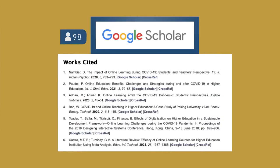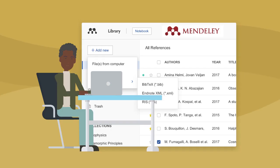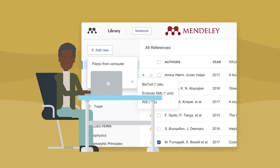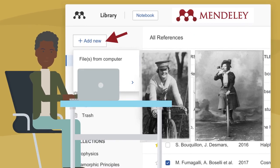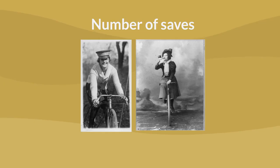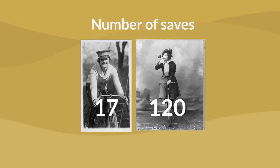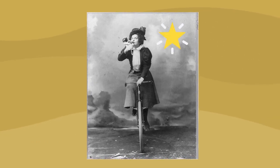Tools like Google Scholar use the Works Cited or Reference section of papers to track how often digital objects are cited and where they appear. Citation managers, like Mendeley, can help researchers keep track of the digital objects they use. These tools allow people to save the references they find useful and can help you assess how many other people have saved your digital object. This can help predict which of your digital objects will be important in the future.